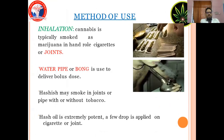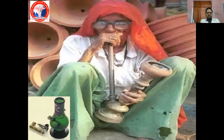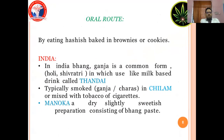Methods of use: Inhalation. Cannabis is typically smoked as marijuana in hand-rolled cigarettes or joints. Water pipes are also used. Hashish may be smoked in joints with or without tobacco. Hash oil is extremely potent; a few drops are applied on cigarettes or joints. In India, bhang or ganja is the most common form. Bhang is a milk-based drink called Thandai. Cannabis is also typically smoked as ganja, charas, or chillam, or mixed with tobacco cigarettes.